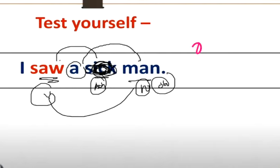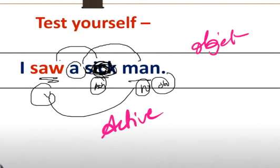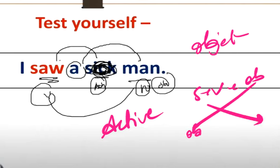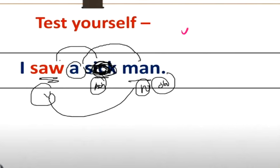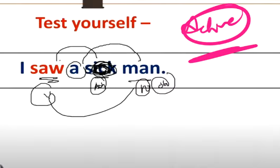So why are we studying this concept of object? We are studying it because of active and passive voice. Active-passive means subject plus verb plus object. So what is the subject, what is the verb, and what is the object? If you don't know what an object is, you cannot understand active and passive voice. That is why the concept of object is important to understand clearly.